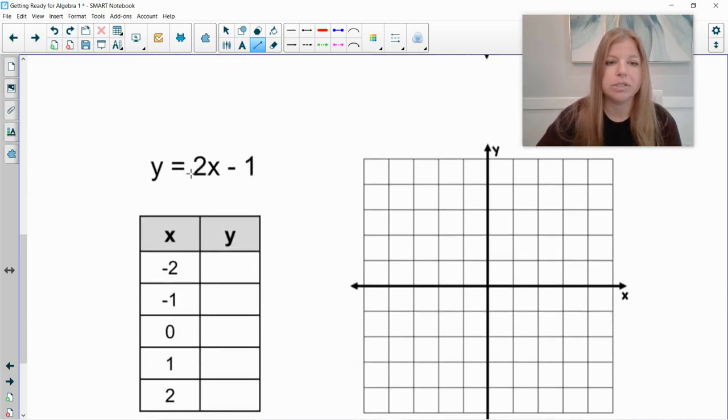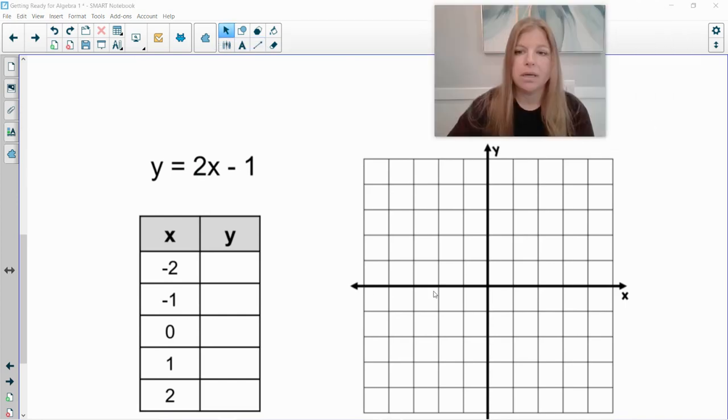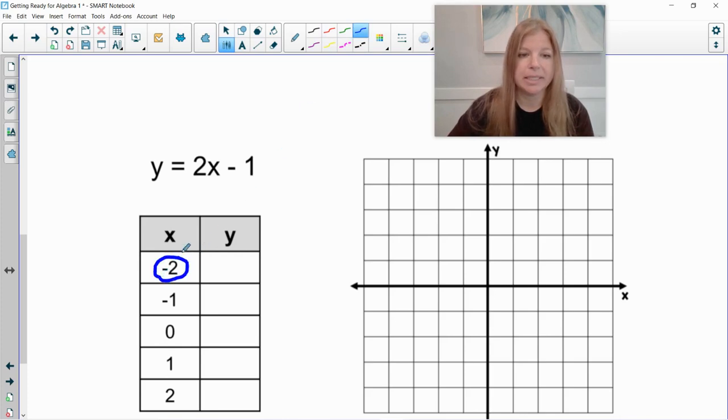y equals 2x minus 1. Okay. So this would mean I have to plug in each one of these x values. I'm using the same x values just as a basic example. So wherever I see x in the function, the equation is where I'm substituting in my values.